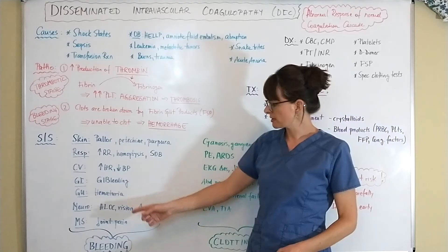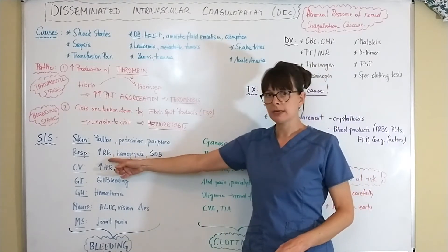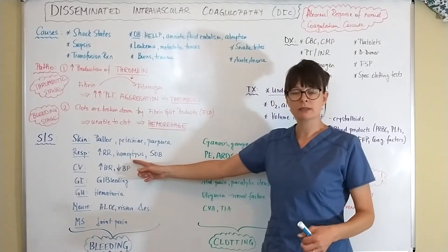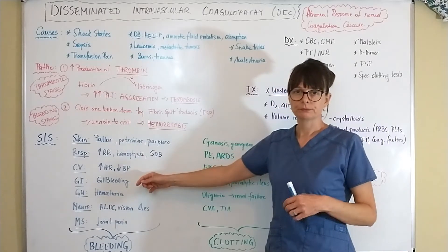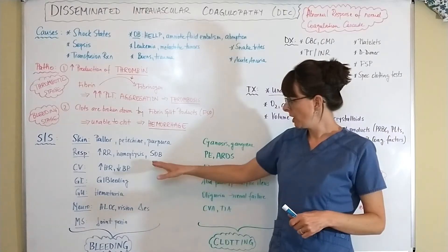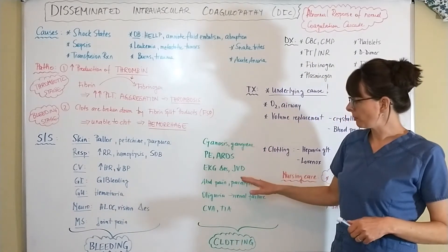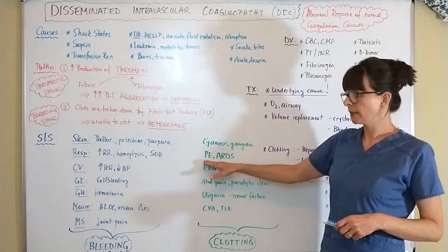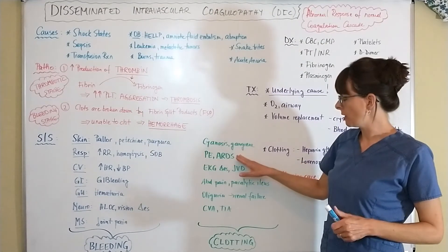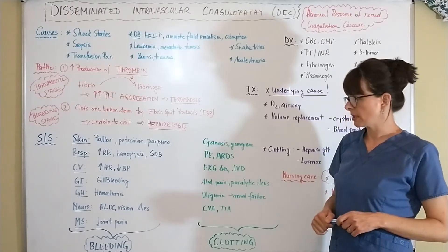In the respiratory system, bleeding causes an increased respiratory rate, hemoptysis, and shortness of breath as the lungs are affected. Clotting can lead to pulmonary emboli (PE) settling in the lung, as well as ARDS — acute respiratory distress syndrome.